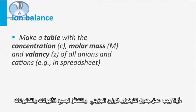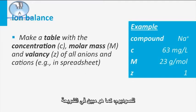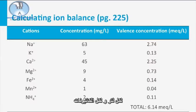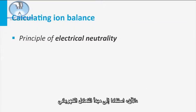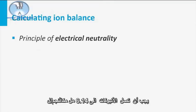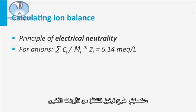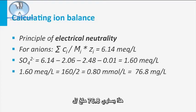First, you make a table with the concentration, molar mass and valence of all anions and cations, for example in a spreadsheet. For sodium, this is depicted in the slide. Then calculate the valence concentration in milliequivalents per liter for all cations. This adds up to a total valence concentration of 6.14 milliequivalents per liter. Now, based on the principle of electrical neutrality, also the anions should add up to 6.14. When subtracting the valence concentration of the other anions — chloride, bicarbonate and nitrate — you end up with a valence concentration of 1.6 for sulfate. This equals 76.8 milligrams per liter.